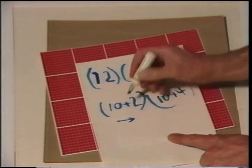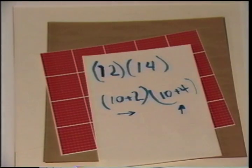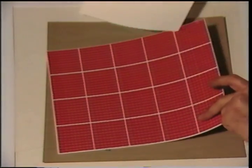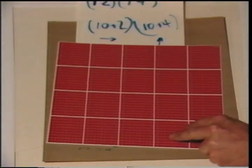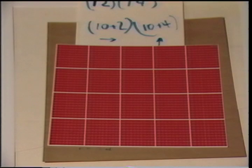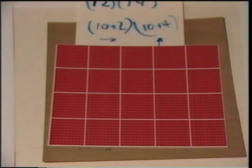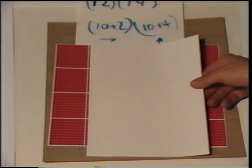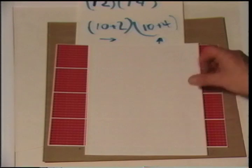Here we have over distance, up distance. We have to build a rectangle given that information. Notice, we have to come over one bar of ten. Let's come over one bar of ten.